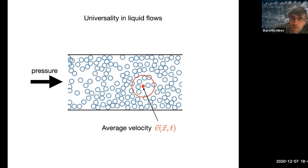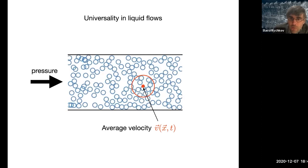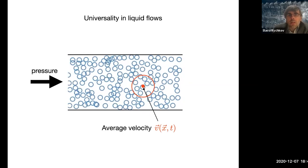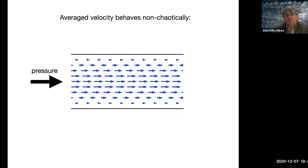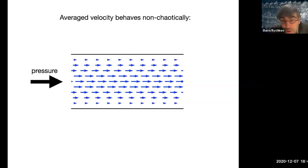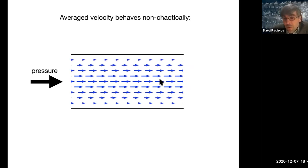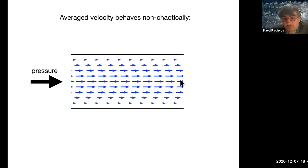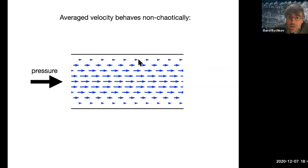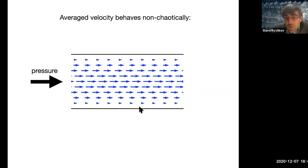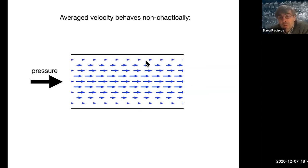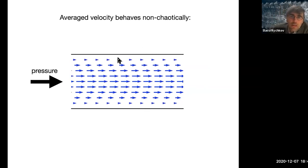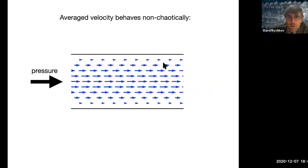Now, if I have to follow every molecule individually it's complicated, but in terms of this average velocity the flow of the liquid in the pipe behaves much more regularly, much nicer. I have a regular velocity field — the velocity is maximal in the center of the pipe, then it gradually decreases toward the sides of the pipe because of the friction of the liquid against the walls. So it looks much nicer. Of course this is a very idealized, very regular flow.